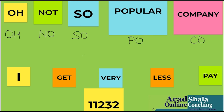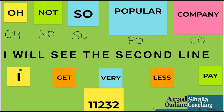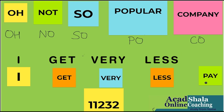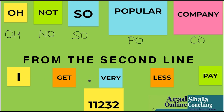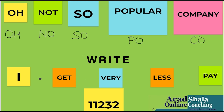I have written the first two letters of every word. Now my next step is to look at the second line: 'I get very less pay.' What I am going to do with this second line is count the number of letters in every word and write the total on it. First word 'I' — one letter, I will write one. 'Get' — three letters, I will write three. 'Very' — four letters, I will write four. 'Less' — four letters, I will write four. 'Pay' — three letters, I will write three.